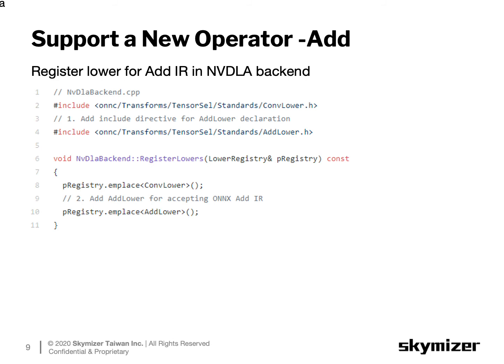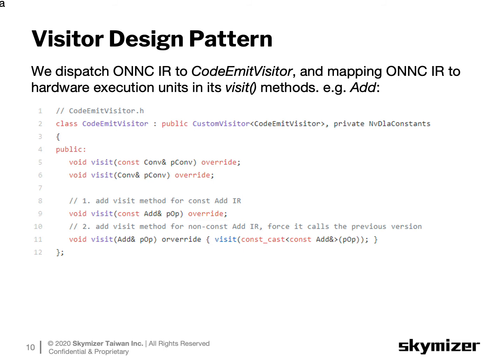In addition, in the register lower method of the target backend, remember to register the Add lowerer to accept Add IR from an ONNC model. To simplify the codegen implementation, we use the visitor design pattern to dispatch each ONNC IR to their corresponding overloading functions. Each operator has its own visitor function, and that's where we configure the hardware engines to carry out the operation. First, we have to override the visit method inherited from the custom visitor class. There are two visit functions: one accepts const Add type objects, and the other accepts Add type objects. We only need to implement the first visit function for each supported operator.